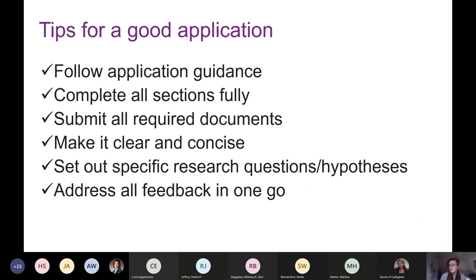Our access team has given the following tips for a good application. First, follow the application guidance, and if you're not sure, contact our help desk through the help pages on our website. Complete all sections fully to avoid going back and forth collecting required documents — though if you are delayed getting some information from your institution, it can come through later. Your applications are reviewed by non-specialists, so please make it easy to understand. Importantly, under the DEA, projects must have a clearly defined scope with specific research questions and hypotheses.